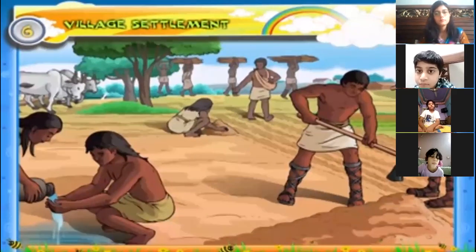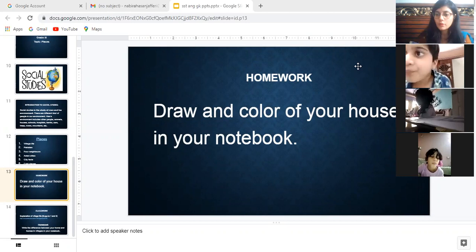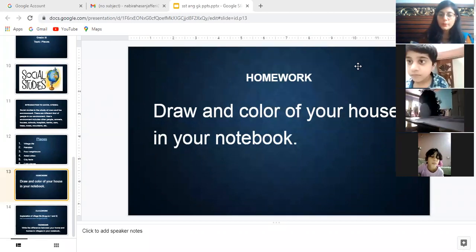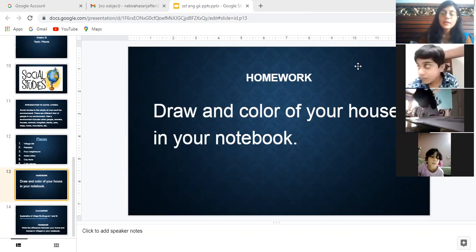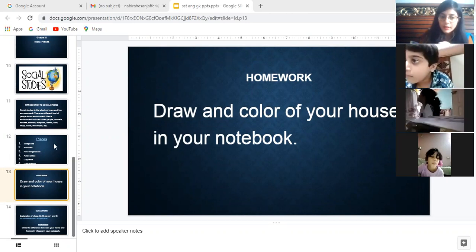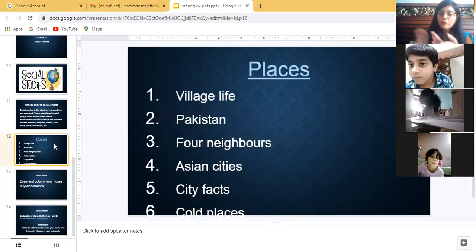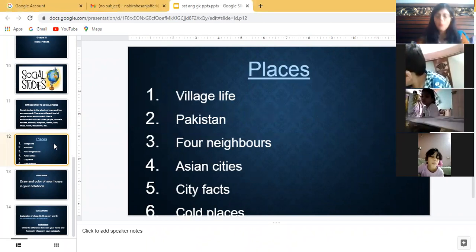All of them started farming on a large scale and slowly they started depending on one another. I'm repeating again: we covered what social studies is, and in the first chapter we are going to study Village Life, Pakistan, Poor Neighbors, Asian Cities, City Facts, and Old Places.